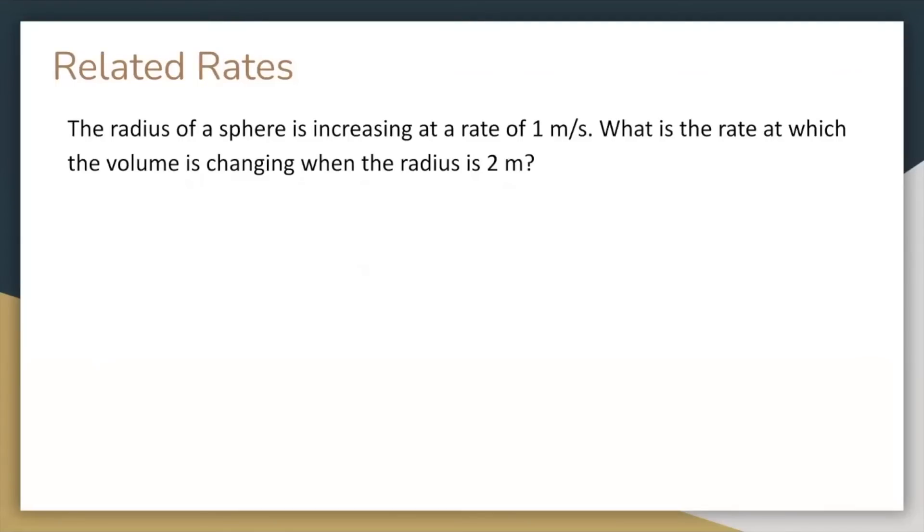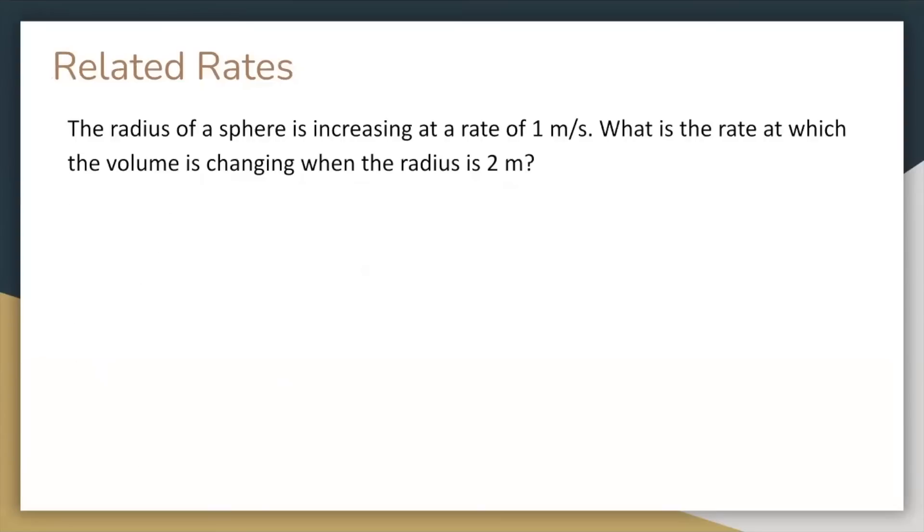Here's an example. The radius of a sphere is increasing at a rate of 1 meter per second. What is the rate at which the volume is changing when the radius is 2 meters? Well, you know the formula for the volume of a sphere, and you want to solve for the rate at which the volume is changing, dv over dt, so you differentiate both sides with respect to t. The problem gave you dr over dt and r, so by plugging those in, you get dv over dt equals 16 pi cubic meters per second.